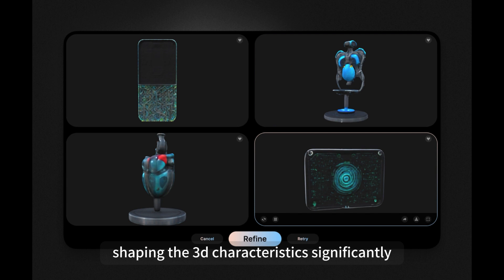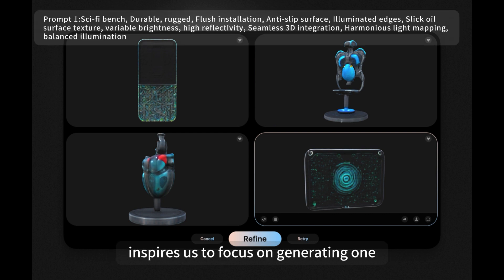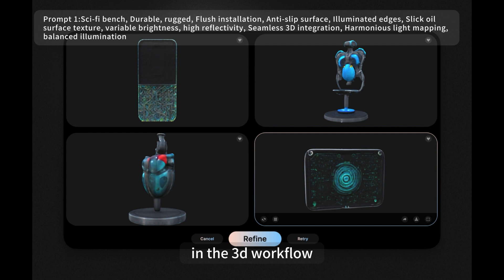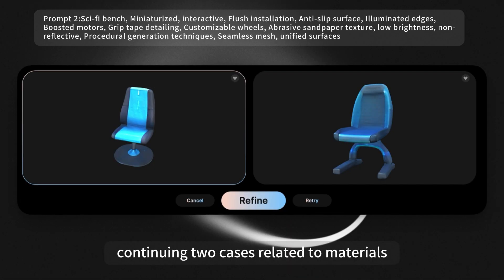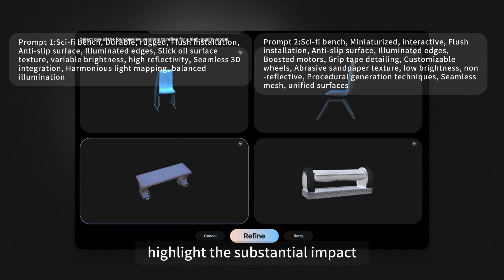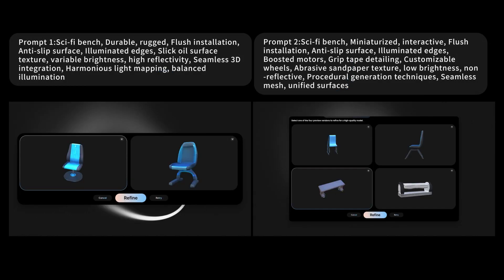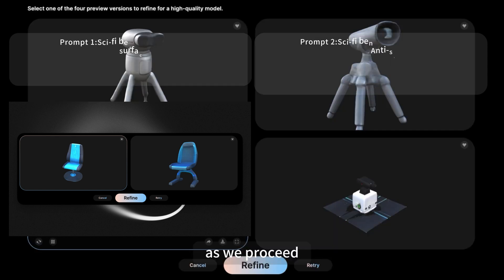The developmental stage of AI products inspires us to focus on generating one item at a time in the 3D workflow. Two cases related to materials — especially comparing the chair materials in the first and second images of P2 and P3 — highlight the substantial impact of reflective properties on the generated results.